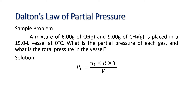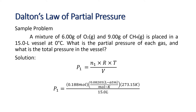P1 equals N1 times R times T over V. Substituting the values: N1 is 0.188 moles, R is 0.08205 liter·atmosphere per mole·Kelvin, and the absolute temperature of 0°C is 273.15 Kelvin, divided by the volume of 15 liters. We get the partial pressure P1, the partial pressure of O2, equal to 0.281 atmosphere.